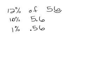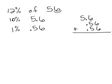Now to get 12%, I need the 10% and then I need 2 of the 1%. And remember that when you are adding decimals, you need to line up the decimal and fill in places with zeros. So 6 plus 6 is 12. 5 and 5 is 10, plus 6 is 16, plus 1 is 17. And 5 plus 1 is 6. Bring the decimal straight down.